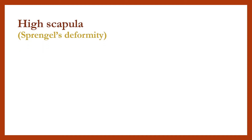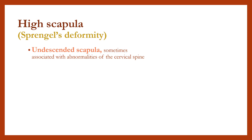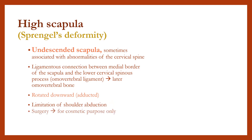High scapula, or Sprengel's deformity, is an undescended scapula, sometimes associated with abnormalities of the cervical spine and a ligamentous connection between the medial border of the scapula and the lower cervical spinous process, rotated downward, causing limitation of shoulder abduction. Surgery is indicated for cosmetic purposes only.